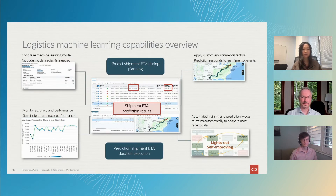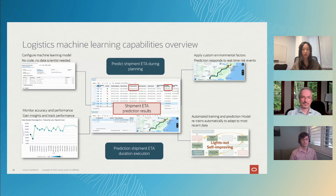The second pillar is after the shipment departs and while it is traveling to its destination, the GPS updates and milestones feed into machine learning, and machine learning re-predicts and refines the ETA with increasing accuracy.